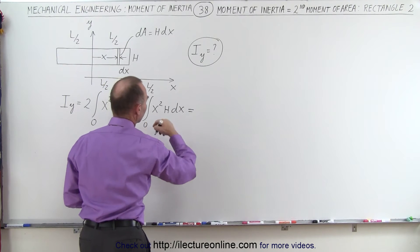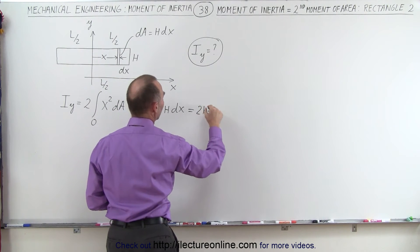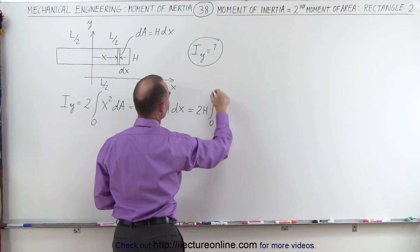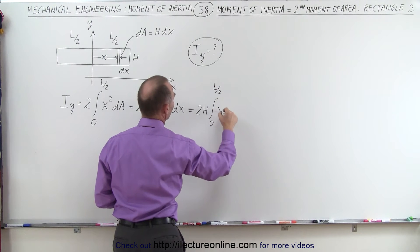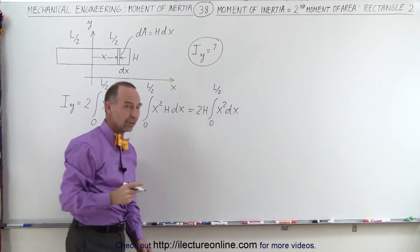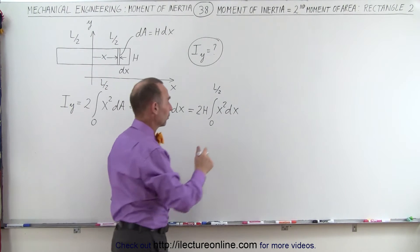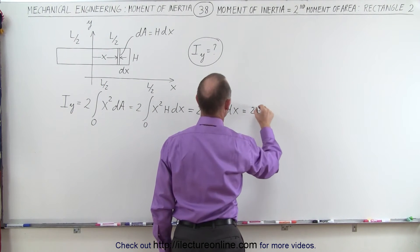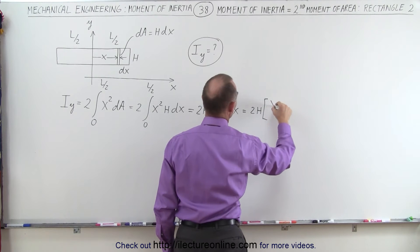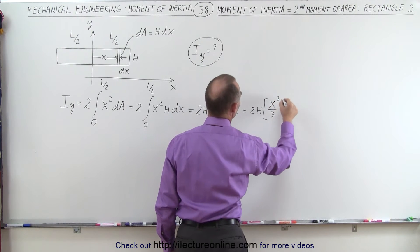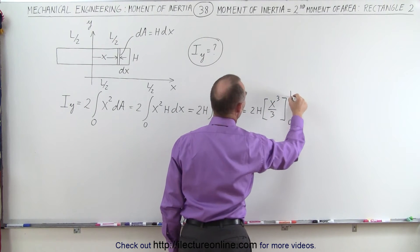And taking the h outside the integral sign, we get 2 times h times integral from 0 to L over 2 of x squared dx, and that we can easily integrate. That becomes x cubed over 3, so this is 2h times x cubed over 3, evaluated from 0 to L over 2.